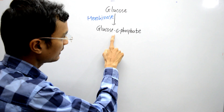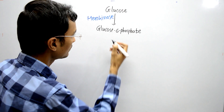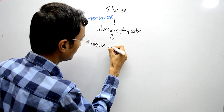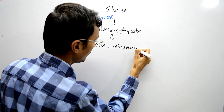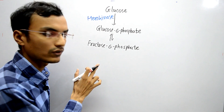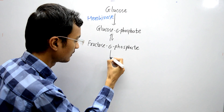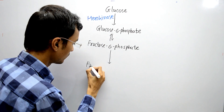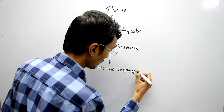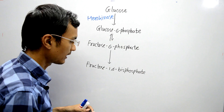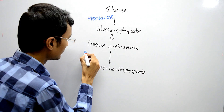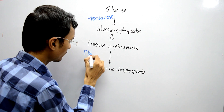Now, glucose-6-phosphate is interconverted — this is a reversible step — and it is converted into fructose-6-phosphate. The next step is irreversible: fructose-6-phosphate is converted into fructose-1,6-bisphosphate. The enzyme catalyzing this irreversible step is phosphofructokinase.